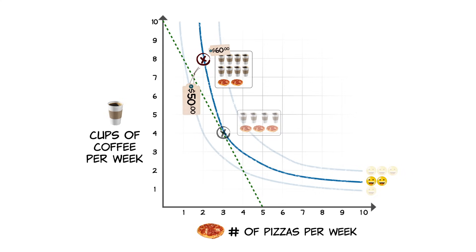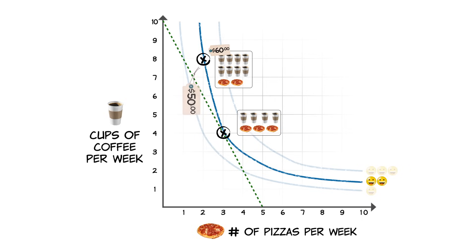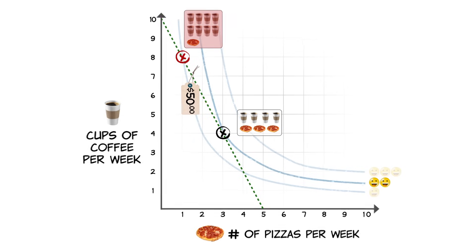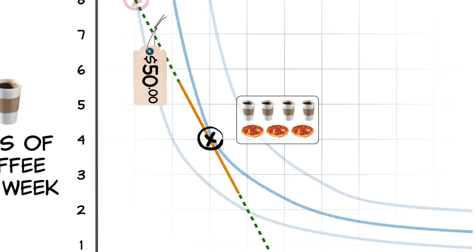You are indifferent between this combination and this combination; both are on the same indifference curve, which means they provide you with the same utility. So if you are trying to get the most utility you can given what you can afford, you will never choose a combination of goods that intersects your budget constraint — you will choose one that is tangent to it.